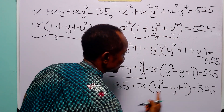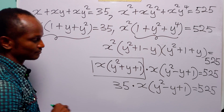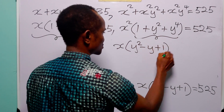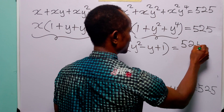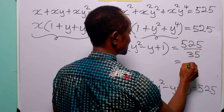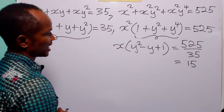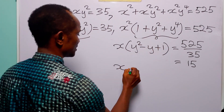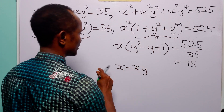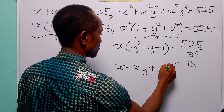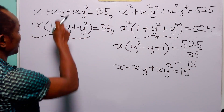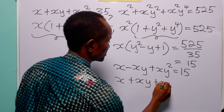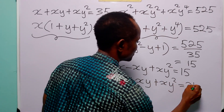Now, from the first equation, x times 1 plus y plus y squared equals 35. So this means 35 multiplied by x times y squared minus y plus 1 equals 525. If we divide both sides by 35, we get x times y squared minus y plus 1 equals 15. Expanding this, we have x minus xy plus xy squared equals 15. And from the first equation, x plus xy plus xy squared equals 35.